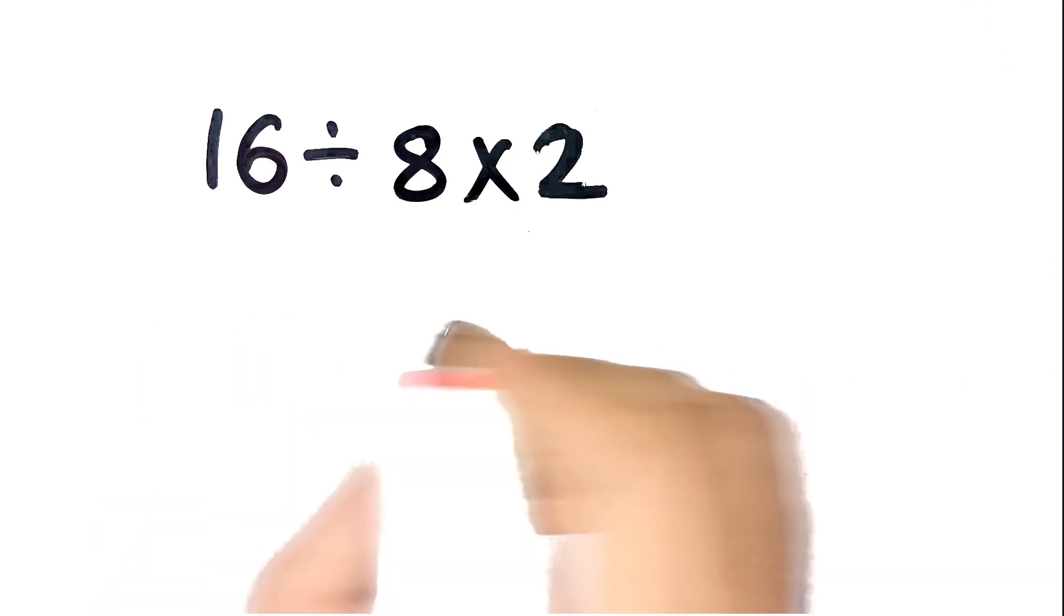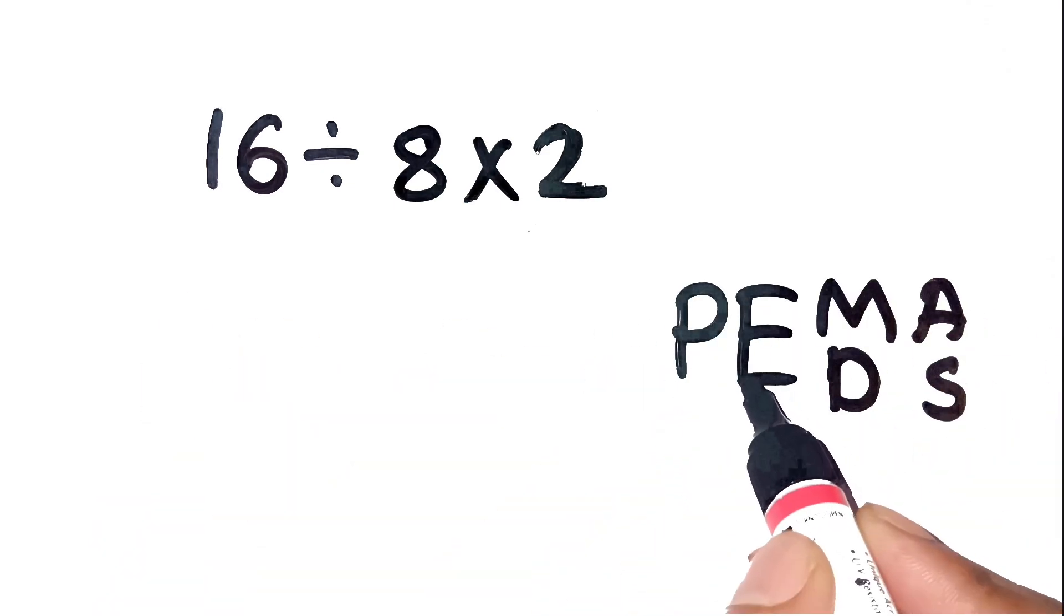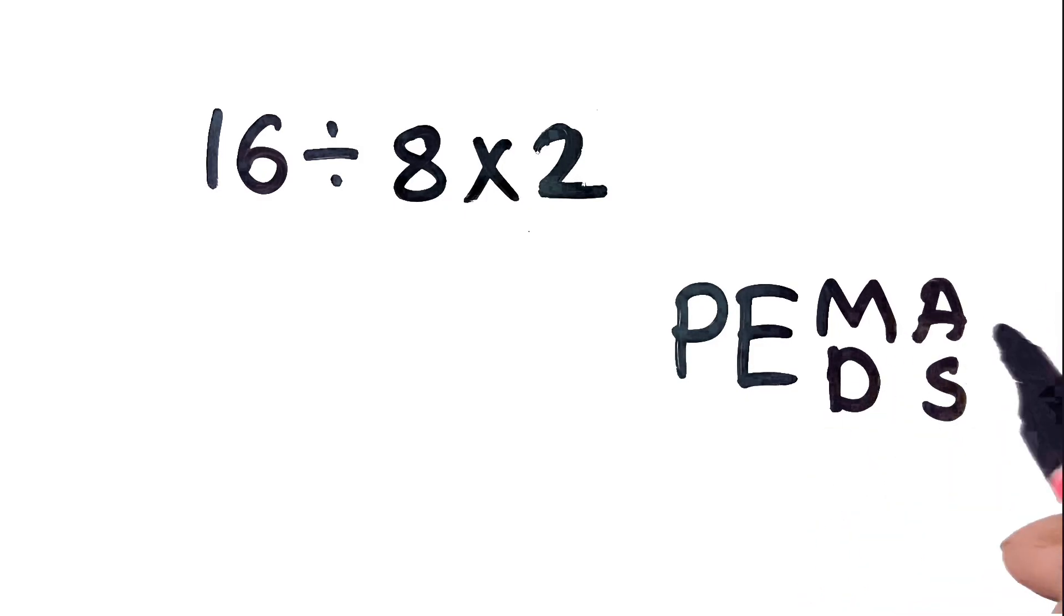Here's the thing. Math has a proper order of operations called PEMDAS. That's P for parentheses, E for exponents, M for multiplication, D for division, A for addition, and S for subtraction.